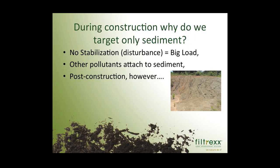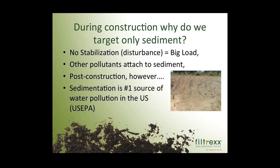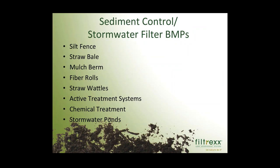In post-construction, this is not the case. Where stabilization exists — through impervious surfaces or vegetation — sediment is no longer the chief pollutant. We now must address pollutants in soluble or free-floating form: nitrogen, phosphorus, fecal bacteria, metals, and oil and grease. Some studies show about 80% of the total pollutant load in post-construction stormwater is in the soluble form. That said, according to the US EPA, sedimentation continues to be the number one source of water pollution in the country.